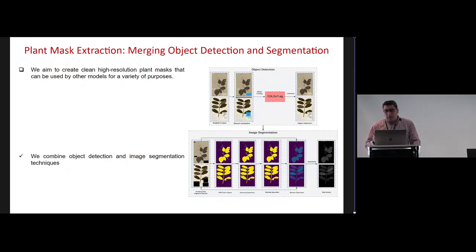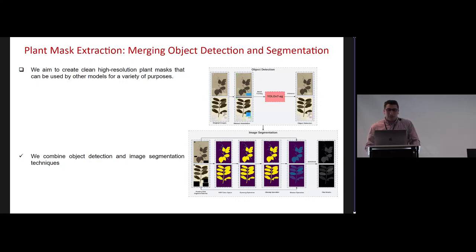Our aim is to create high-resolution clean plant masks. These masks will then be used in other deep learning models for a variety of purposes. For this, we combine object detection techniques and image segmentation. For the object detection, our aim is to detect and identify the non-plant elements in order to remove them from the image. Then we use segmentation in order to remove all the background and keep only the plants.